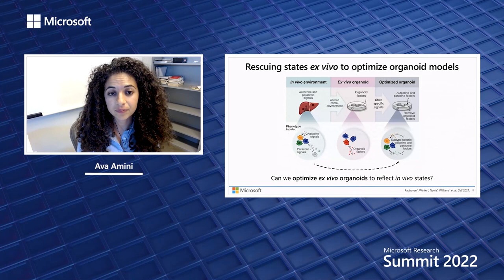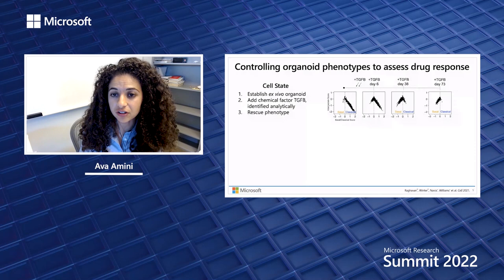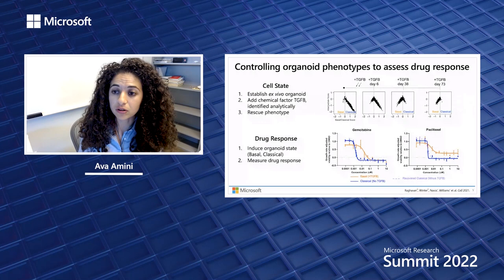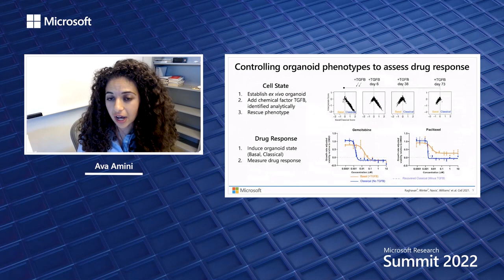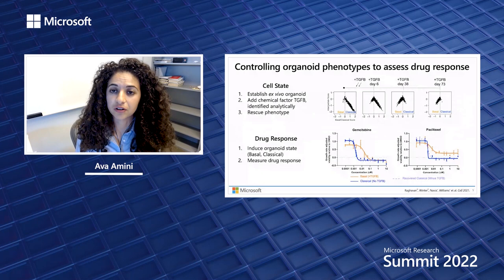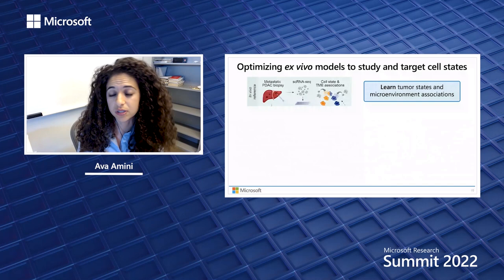This poses the interesting question of whether we can change the culture of these lab models to rescue particular cell states and optimize our models to best match a patient's actual biology. The short answer is yes. We find that after establishing these lab models, we can add back particular microenvironmental factors identified computationally, and that this actually rescues states that were previously lost. By inducing these particular cellular states in our lab models, we can profoundly influence the cell's phenotype and response to screened drugs, meaning we can build a better lab model that more accurately reflects a patient's response to a particular therapy.